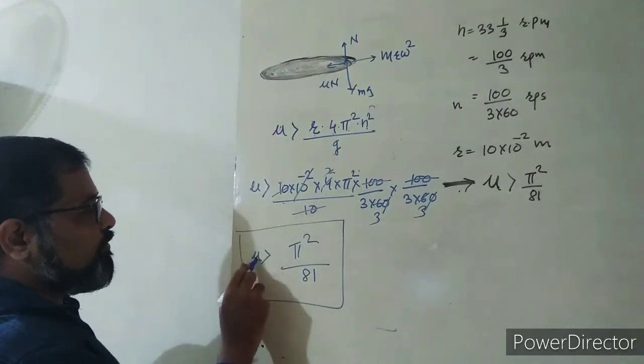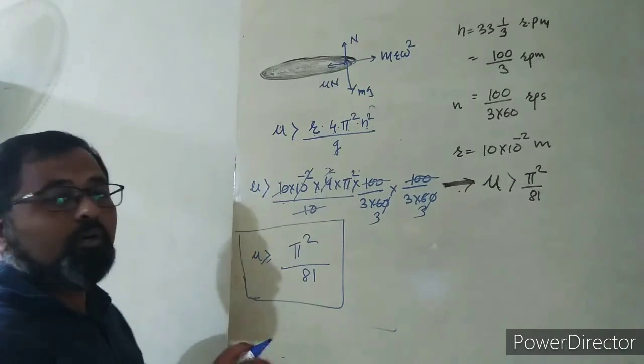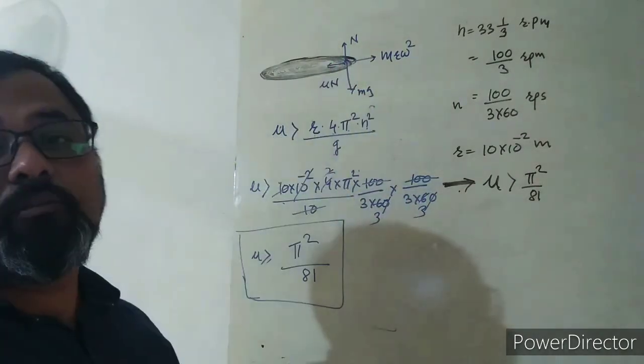They asked to show that it should be greater than or equal to π²/81 if the mosquito is to remain sitting at the same place.